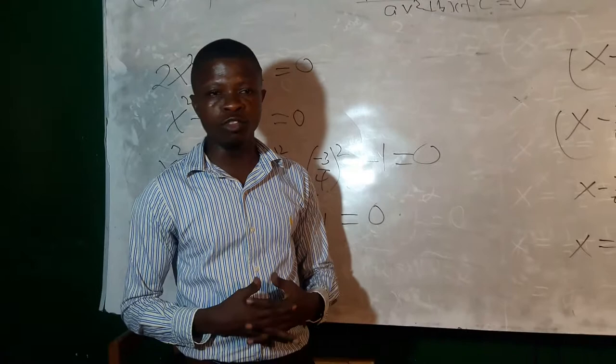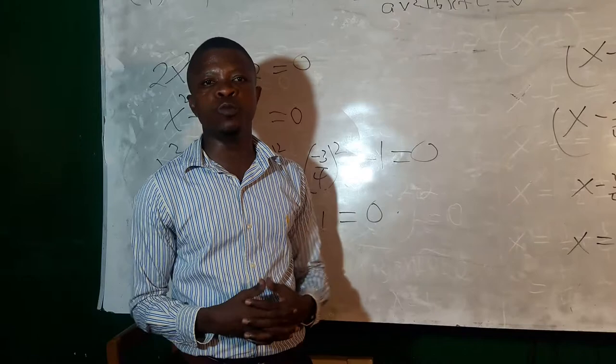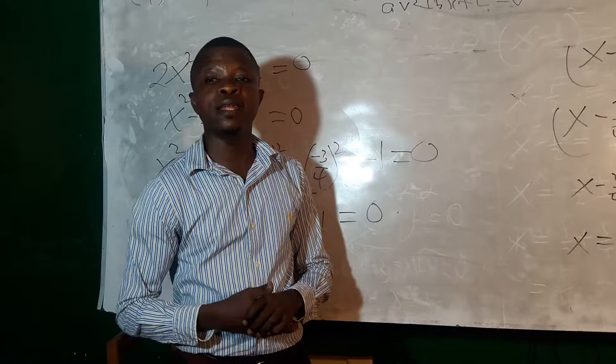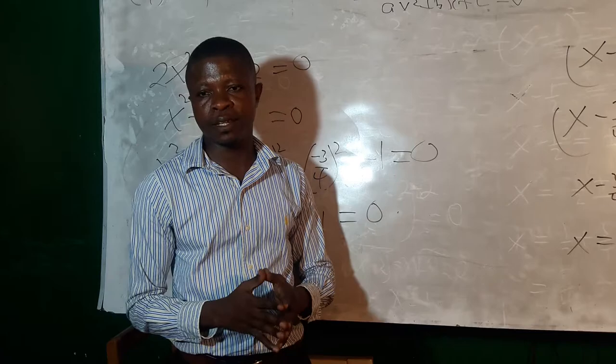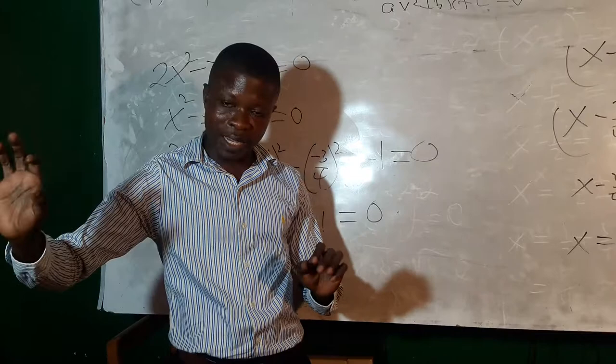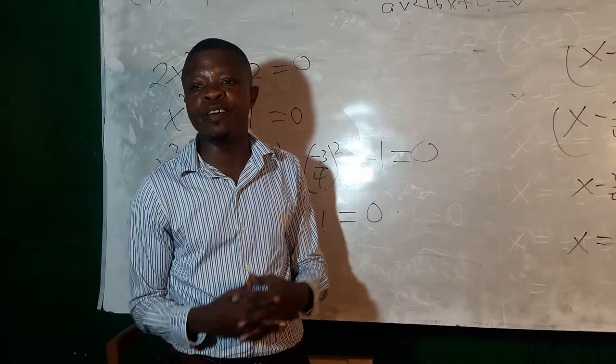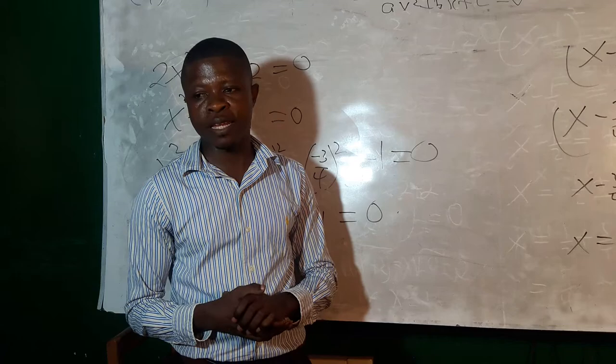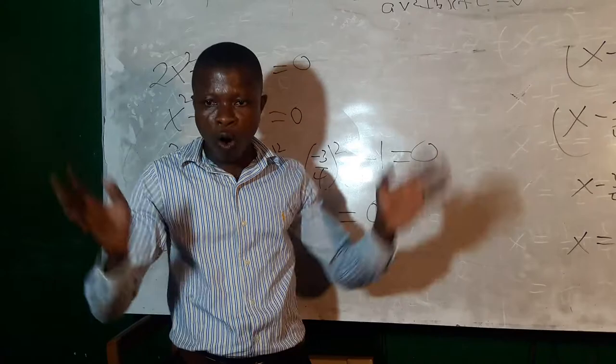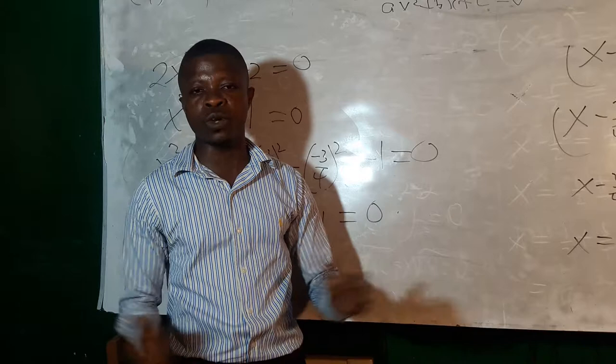The first step is to make the coefficient of x squared equal to 1 by dividing the equation through by the coefficient of x squared. Then find half the coefficient of x — that is b — and square it. If the result equals the constant term c, then the expression is a perfect square. Write it as x plus half the coefficient of b, all squared, set equal to zero, take square roots of both sides, and solve for the roots.